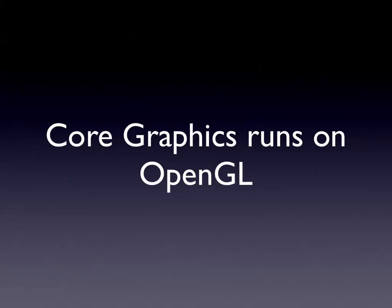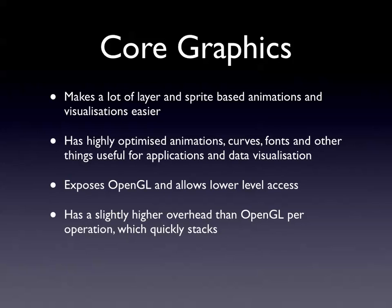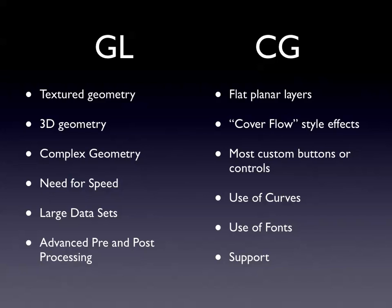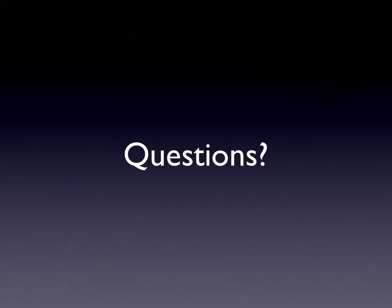Core graphics runs on OpenGL - you can use textures like NS images, and it makes things easier to use. For more complicated things like 3D models or three-dimensional representations, you want OpenGL. OpenGL is better for: textured geometry, 3D geometry, complex geometry, performance-critical applications, and large data sets. Core graphics is more for representing documents, cover flow, and application-level special effects. Use OpenGL when performance matters or complex geometry is involved.